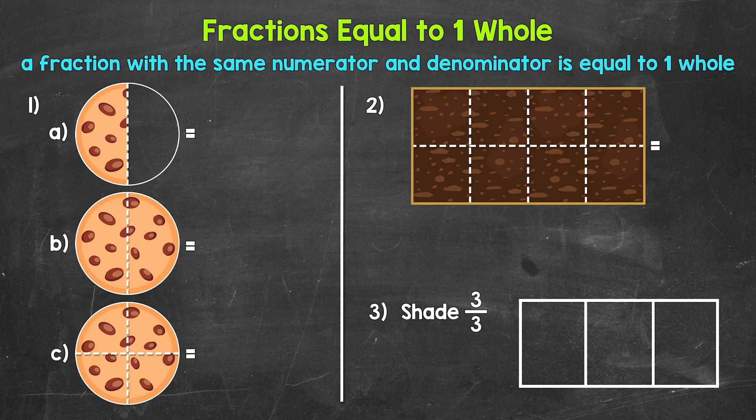Simply put, whenever we have a fraction that has the same numerator and denominator, that fraction is equal to one — the same top number and bottom number. But why is that? How does that work? Let's jump into our examples and find out.